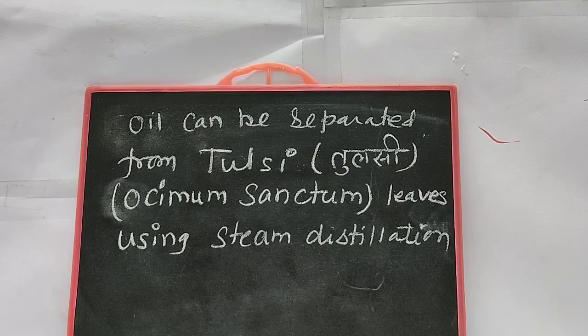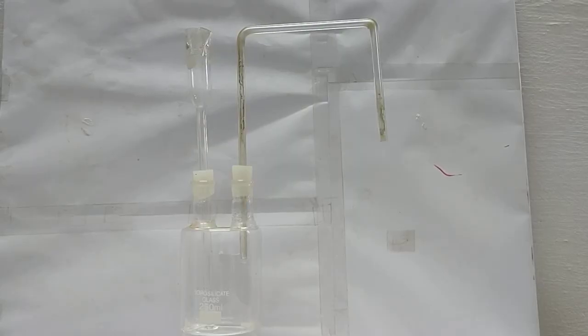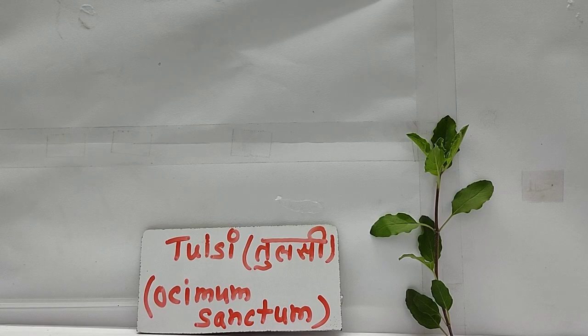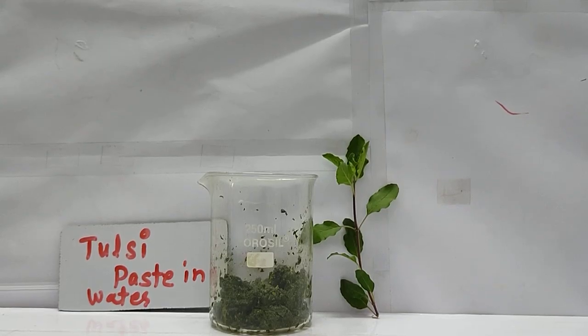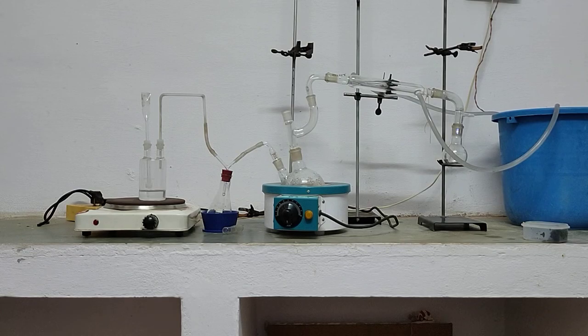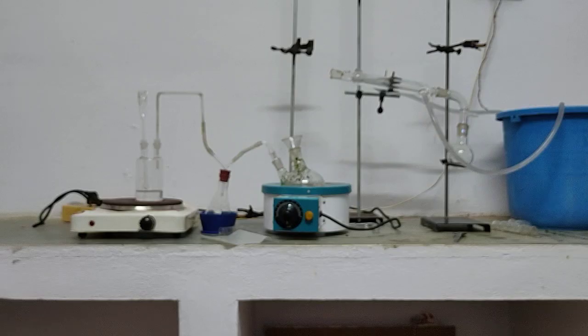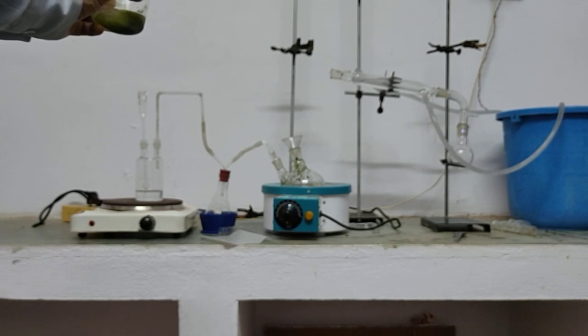Oil can be separated from tulsi. Steam generator and tulsi paste are prepared. The arrangement for steam distillation is set up with tulsi paste in a round bottom flask.